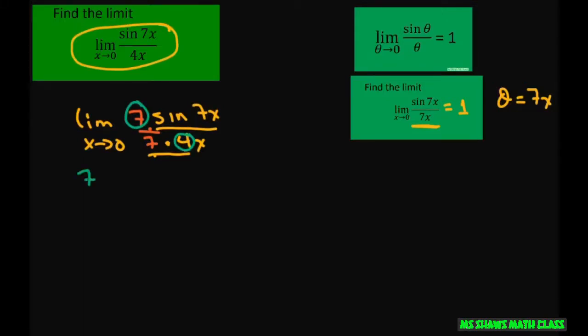So I'm going to get 7 fourths times the limit as x approaches 0 of sine 7x, sorry. And then I'm going to sign 7 times x here, 7x. So I just switched the numbers here.